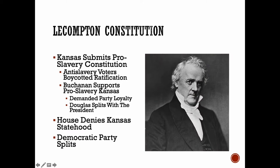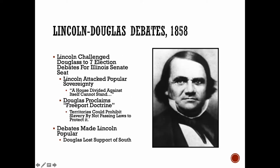How would it play out? Back in Lecompton, Kansas submitted a pro-slavery constitution, and President James Buchanan supported it, making this an issue for party loyalty. This caused a split in the Democrats, and Stephen Douglas left the President's side and did not support him in this initiative. The House denied Kansas statehood, causing a rift in the Democratic Party. In 1858, Abraham Lincoln, a congressman from Illinois, challenged Stephen Douglas to debates. Lincoln attacked the idea of popular sovereignty, saying a house divided against itself cannot stand. Douglas continued to support popular sovereignty and issued the Freeport Doctrine, which said that territories could prohibit slavery simply by not passing laws favoring it.